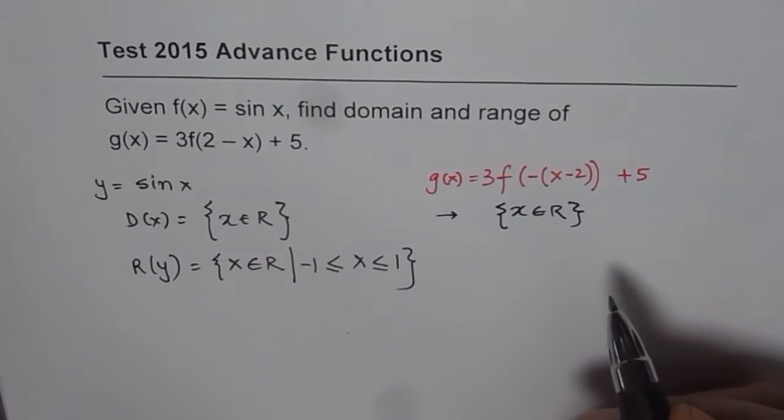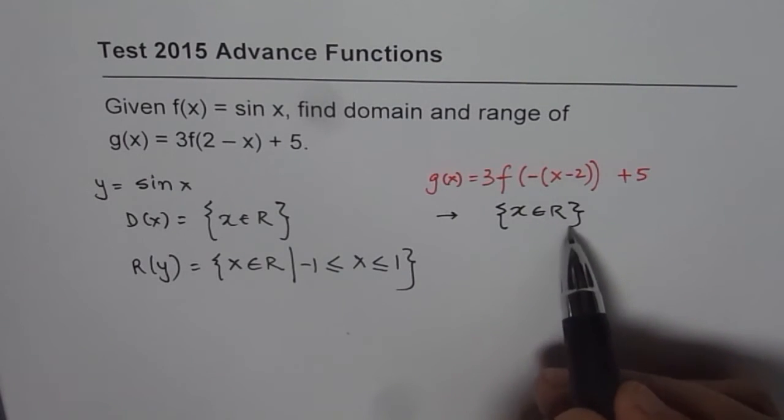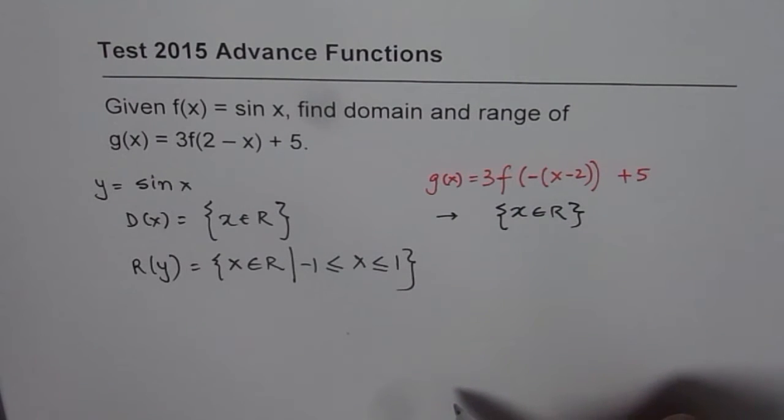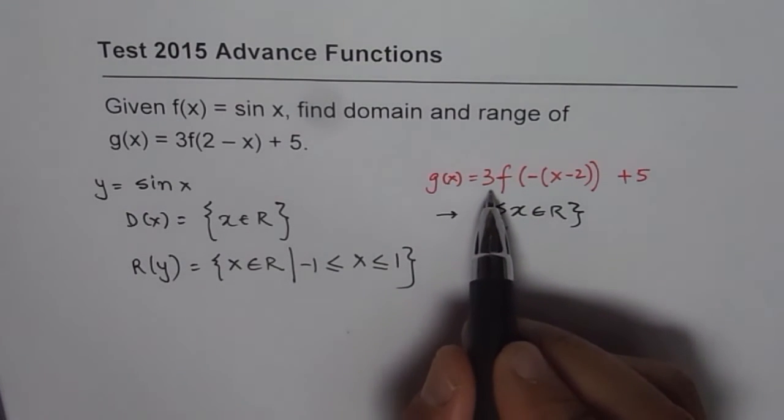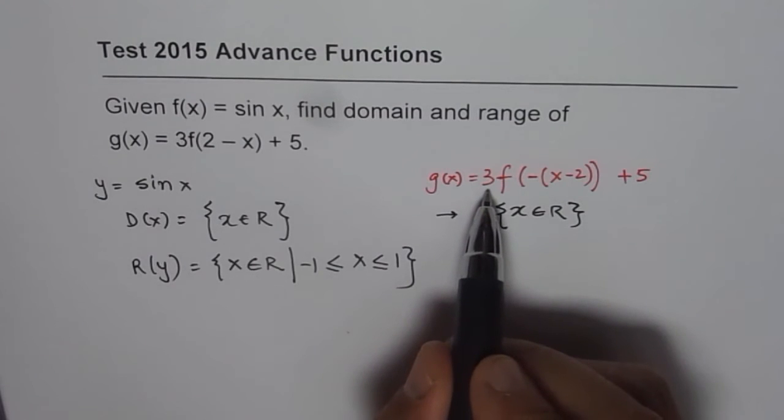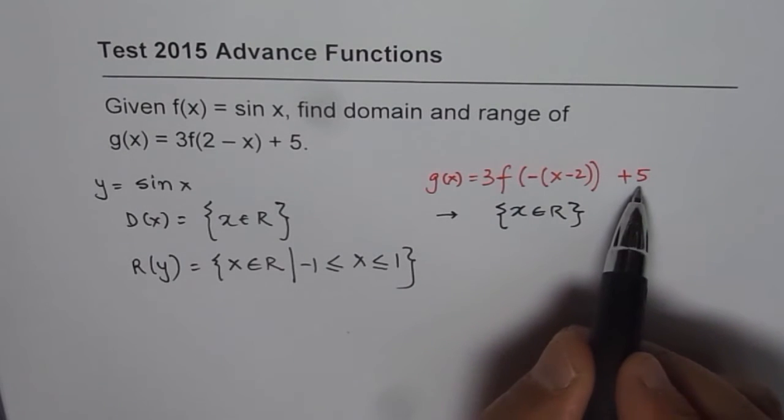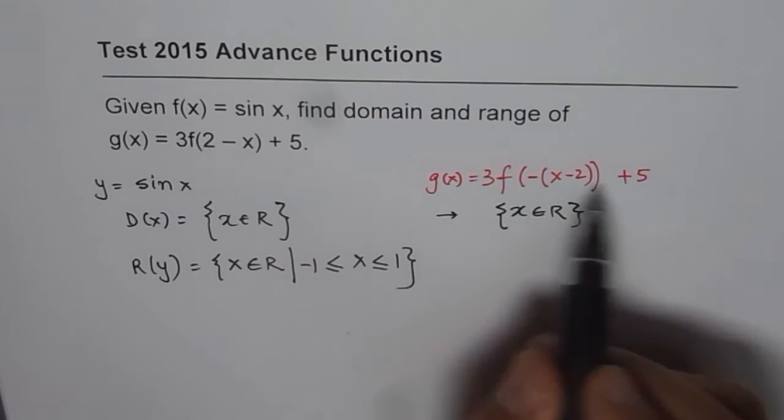There is no restriction on domain. So for transformed sine x function, domain is going to be all real numbers. However, range is restricted. Now how will the range change? It should get multiplied by 3 and then we should add 5 to it.